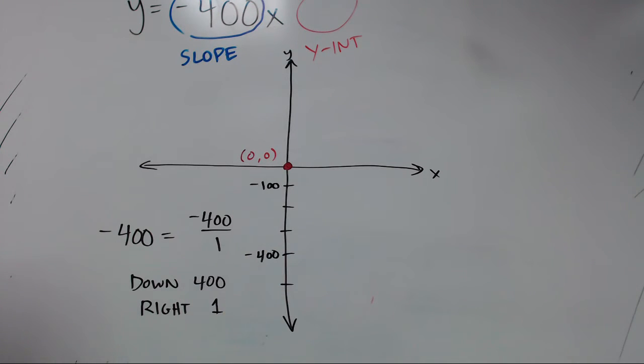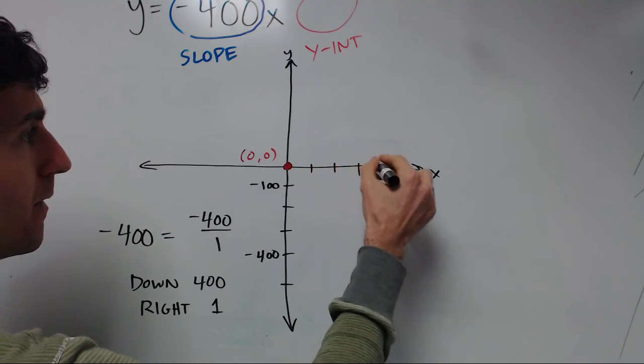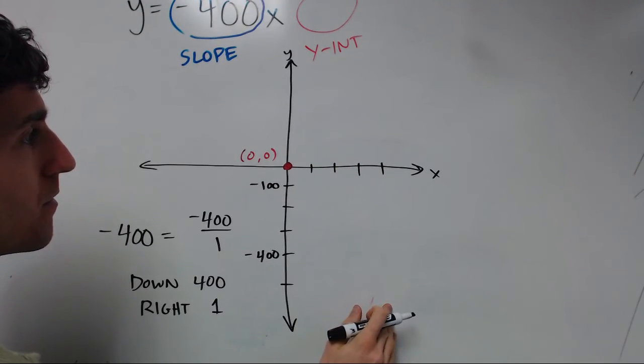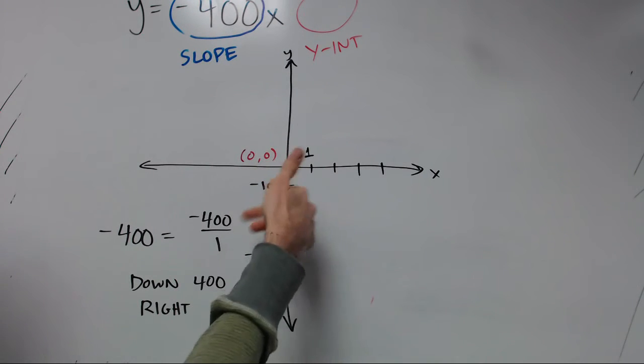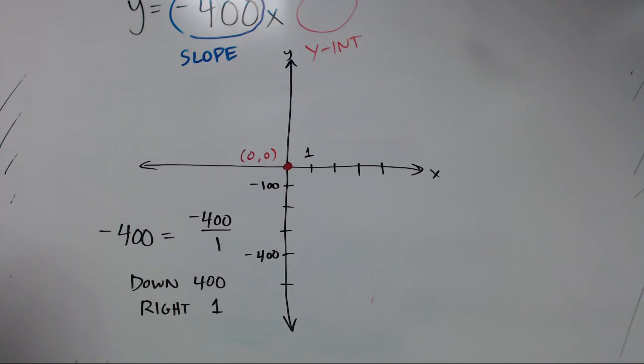So if you can label those, then you can make those different. Since we're just going right 1, it's fine to just keep these as 1, 2, 3. So that'll be 1. You don't have to label it, but if they're different, I like to go ahead and label it, even if one of them is 1, 2, 3.